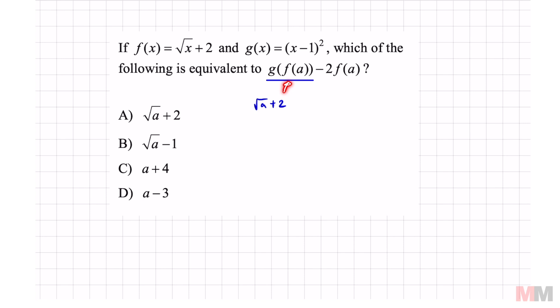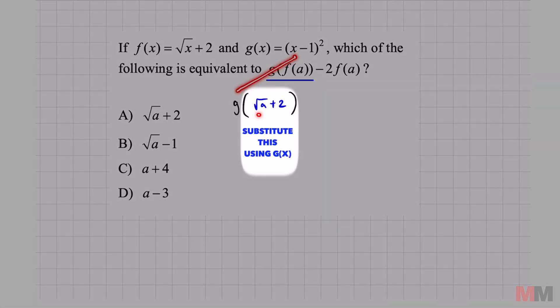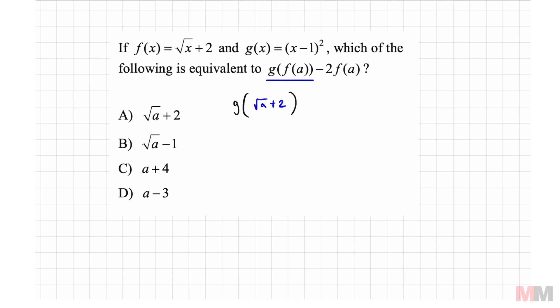So we can write this part right here as g of square root of a plus 2. Now we're going to look at the function of g right here and plug in square root of a plus 2 for wherever we see an x. That's going to look like this. Instead of x we're going to put root a plus 2 and then follow the rest of the function minus 1 and we square that expression right here.